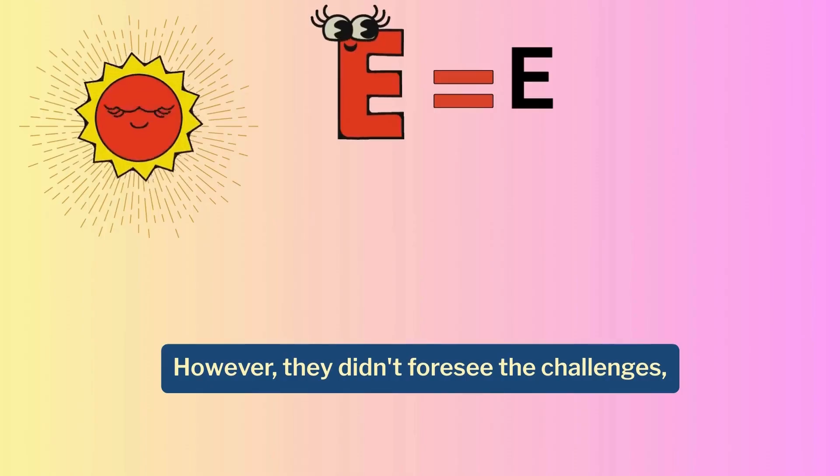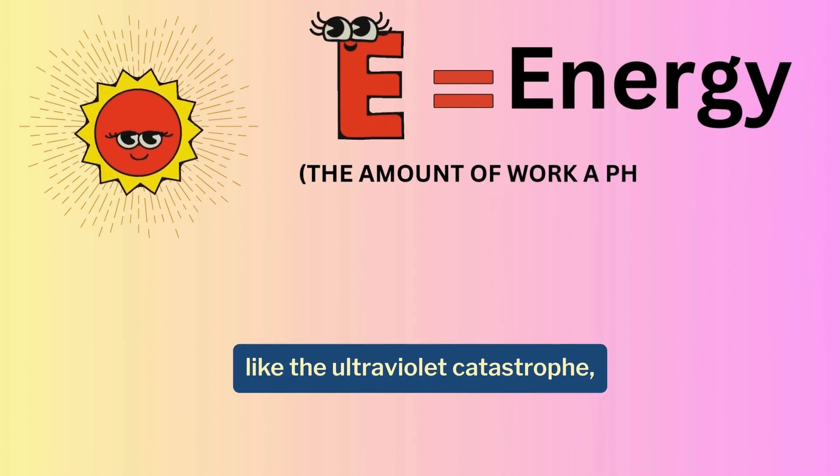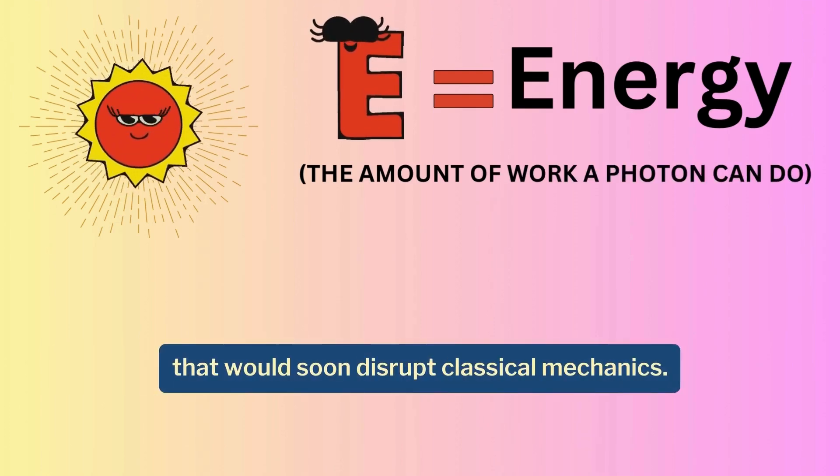However, they didn't foresee the challenges, like the ultraviolet catastrophe, that would soon disrupt classical mechanics.